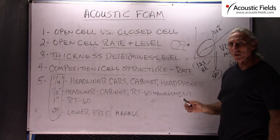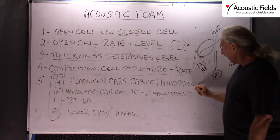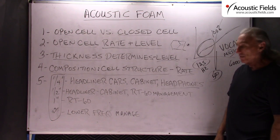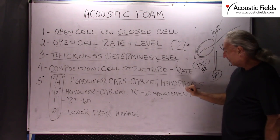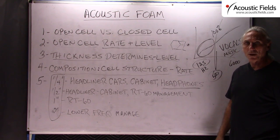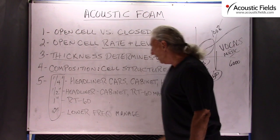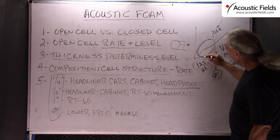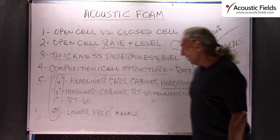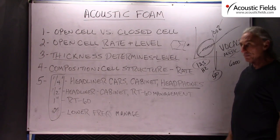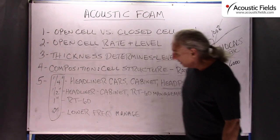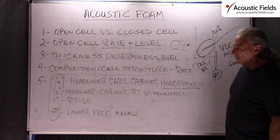We manufacture a quarter inch, half inch, one inch, and two inch thicknesses. The quarter inch is used in headliners of cars, lining the inside of cabinets, speakers, and headphones — we have headphone manufacturers that purchase our quarter inch regularly. Half inch is a little thicker, so we get a bit more absorption below 500. It's also used for headliners, cabinets, and RT-60 management on some room surfaces. The quarter inch and half inch are not used much in room acoustics; we mainly use our one and two inch, with the two inch getting down lower due to thickness.